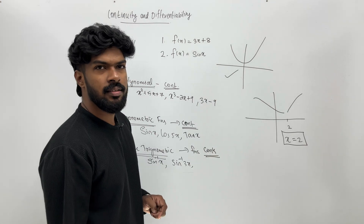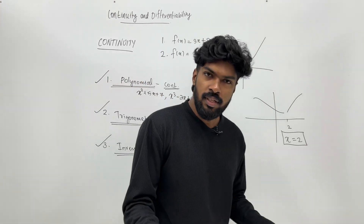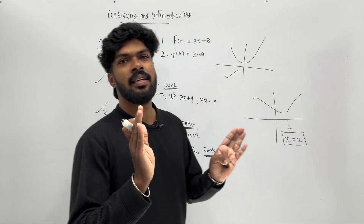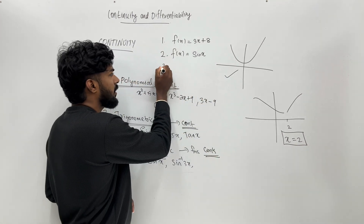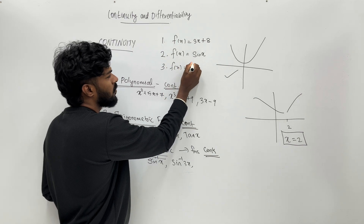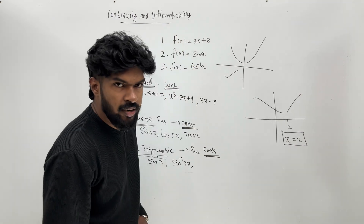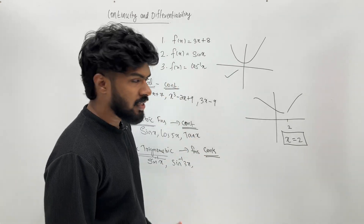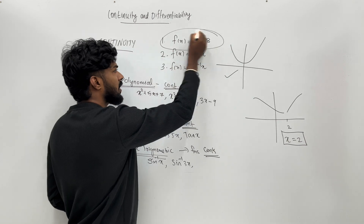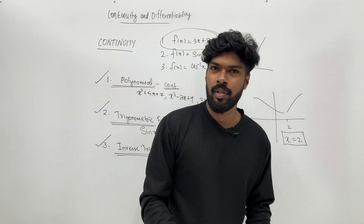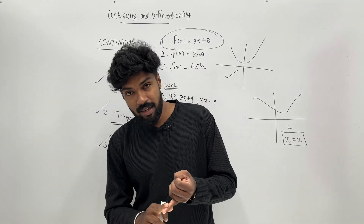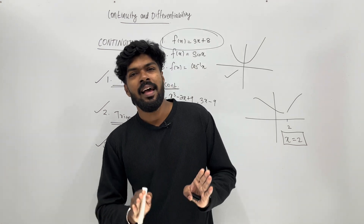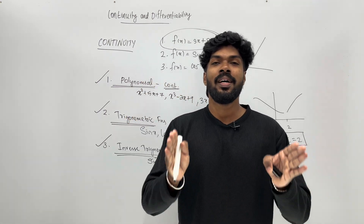This is a trigonometric function. f of x equals sin x is continuous. f of x equals cosine x is also continuous. These are trigonometric functions, and the trigonometric function is continuous.